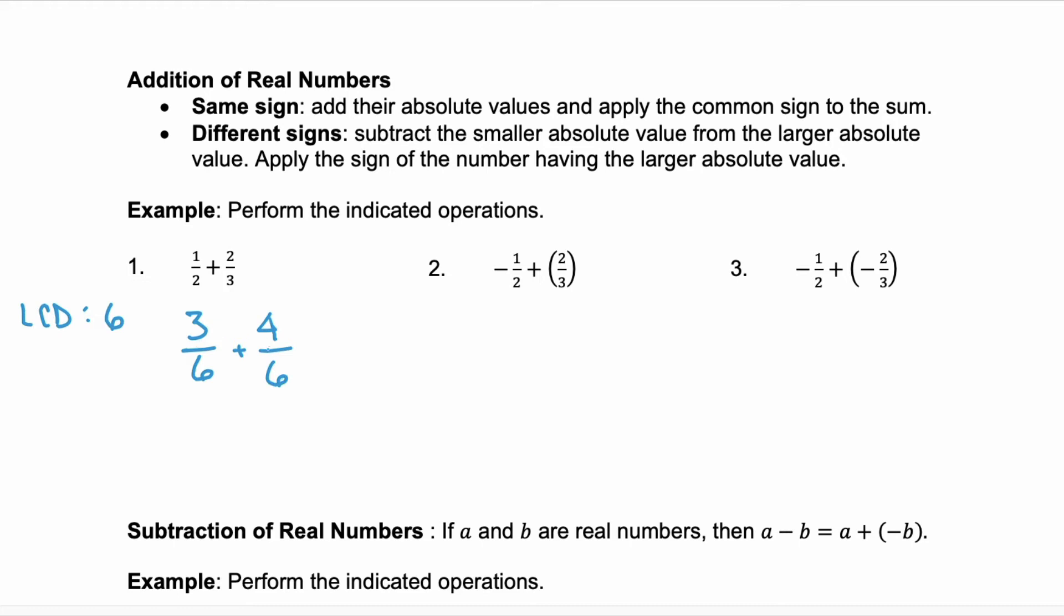So the first fraction is rewritten as 3/6 plus the second fraction of 4/6. Because both of these terms have the same sign, we're going to add them and keep that same sign positive. Remember we add the numerators, so this is a positive 7/6.